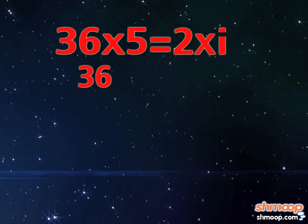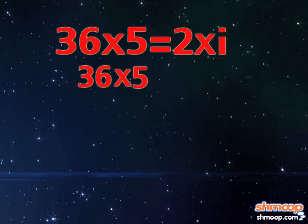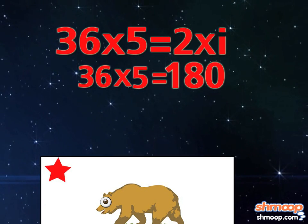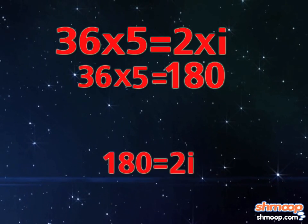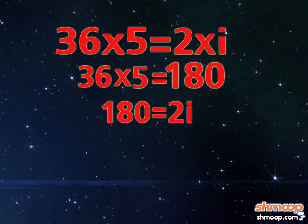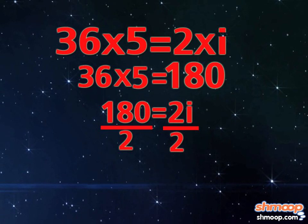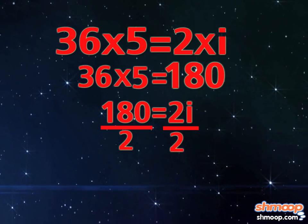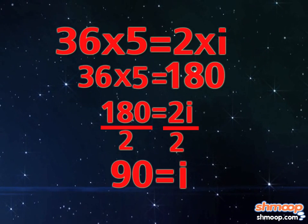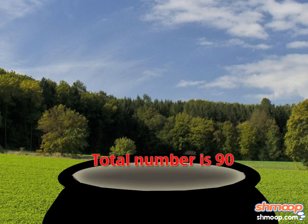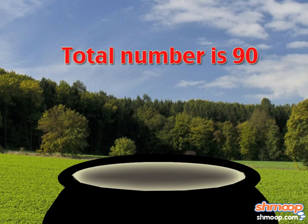36 times 5 equals 180, so 180 equals 2 times i. Next, divide both sides by two to get i equals 90. The total number of items in Leonard's pot is 90.